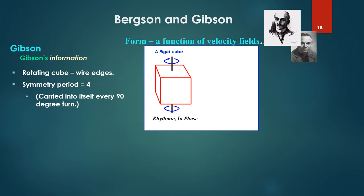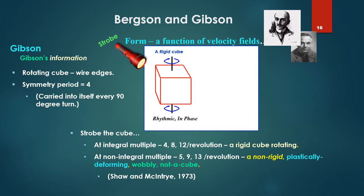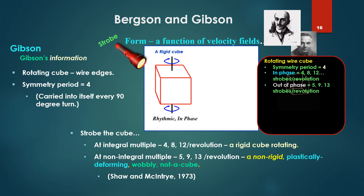This non-rigidness is related to a similar phenomenon. Take a rotating wire-edged cube - it's simply made of wire edges. It has a symmetry period of four, that is carried onto itself, or mapped onto itself, every 90 degree turn. Looks like it did previously on each 90 degree turn. Now strobe the cube. We can strobe it in phase with its symmetry period, that is 4, 8, 12 strobes per revolution, or out of phase - 5, 9, 13 strobes per revolution. At an integral multiple, 4, 8, 12 per revolution, we get a rigid cube rotating. At a non-integral multiple, 5, 9, 13, a non-rigid, plastically deforming, wobbly, not a cube. This is from my advisors, Shaw and McIntyre.